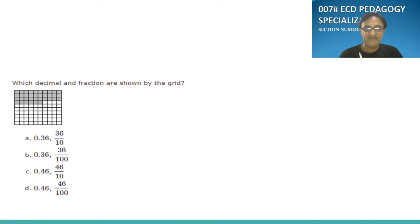Similarly, which decimal and fraction are shown by the grid. Yes, these are 10 and these are 10. So 100, and you count 3, 4, 5. You should know 100. And then you have to count 10, 10, 30 and 36. So 36 by 100, so 0.36. So this is the fraction.